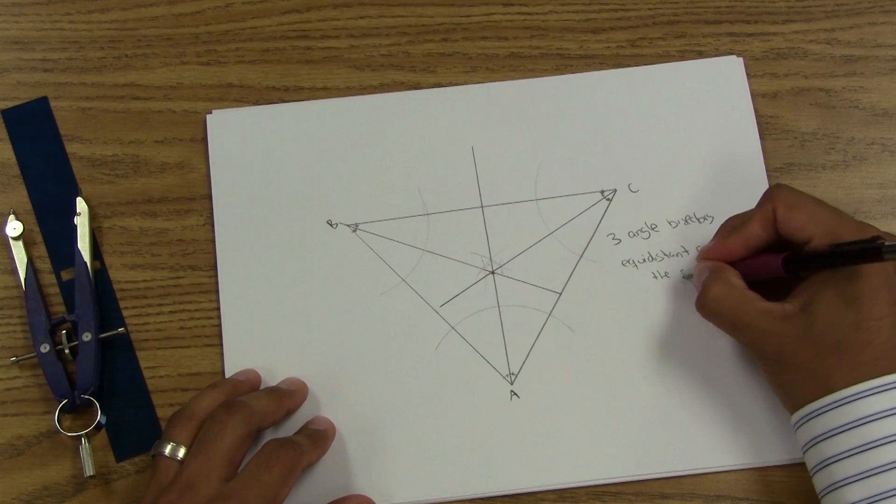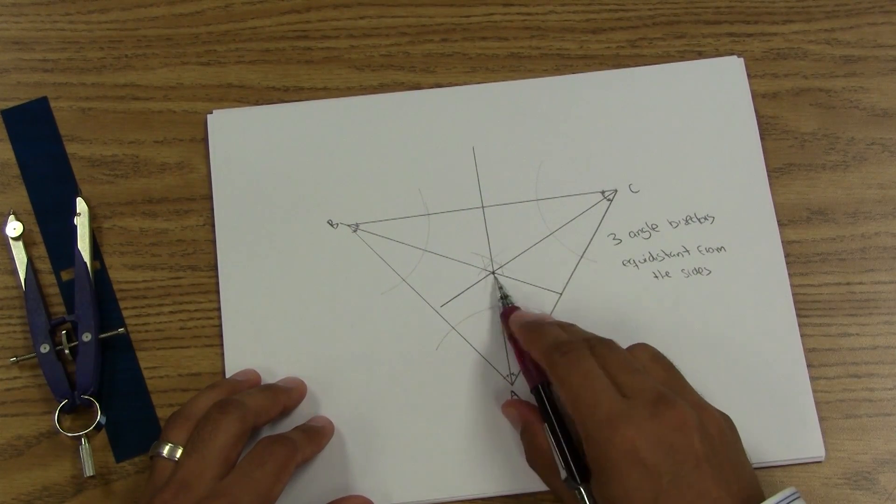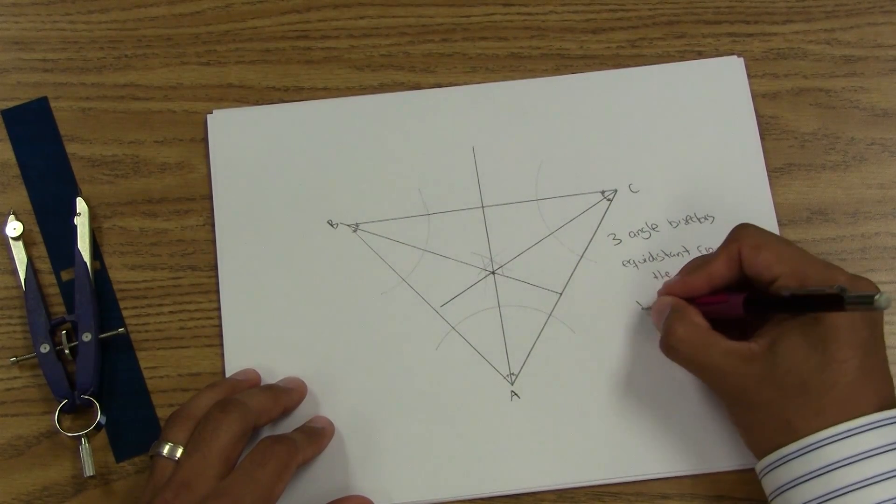So I notice that this point is equidistant from the sides of the triangle, and it must have a special name. The special name for this point of concurrency is called the incenter.